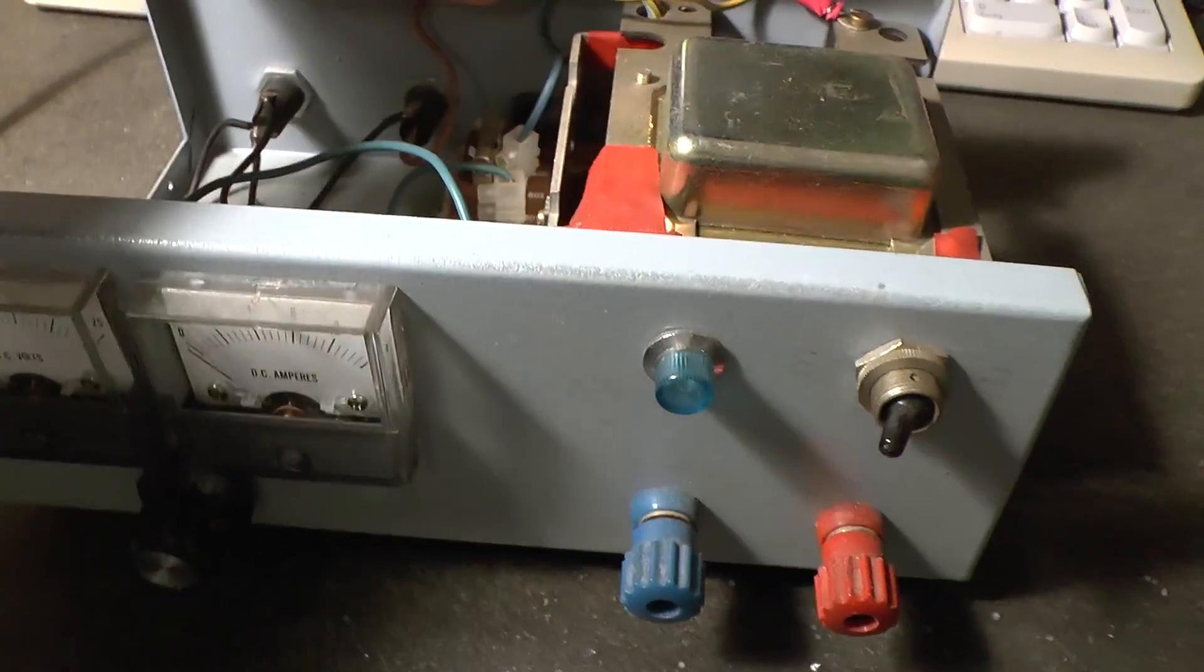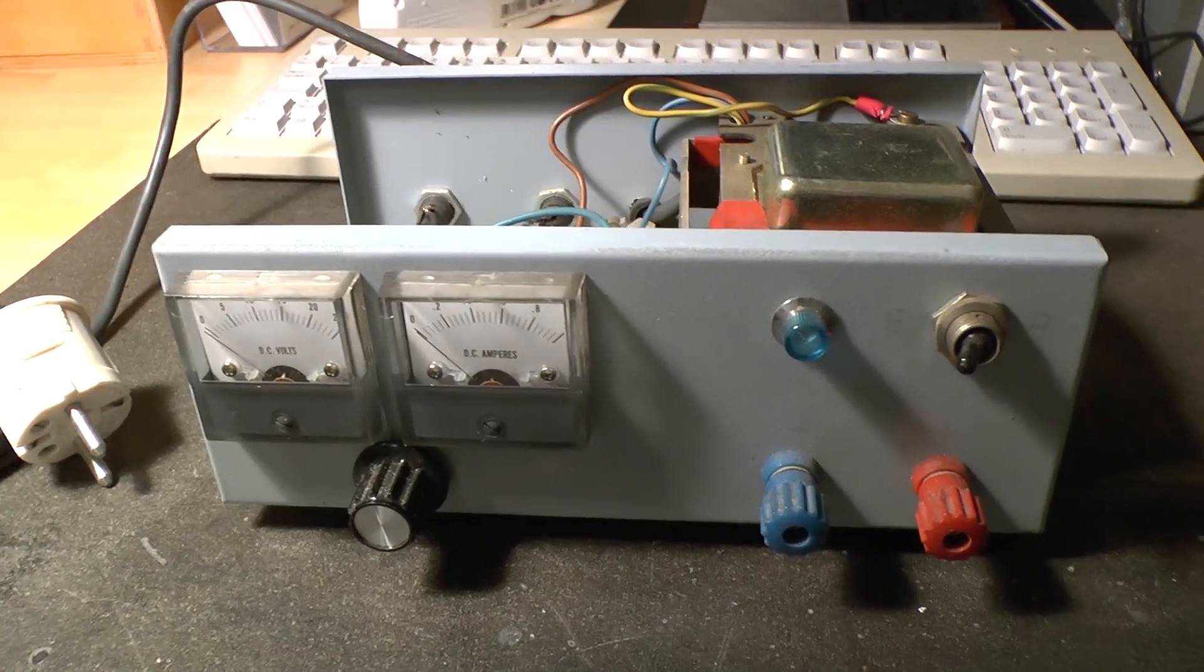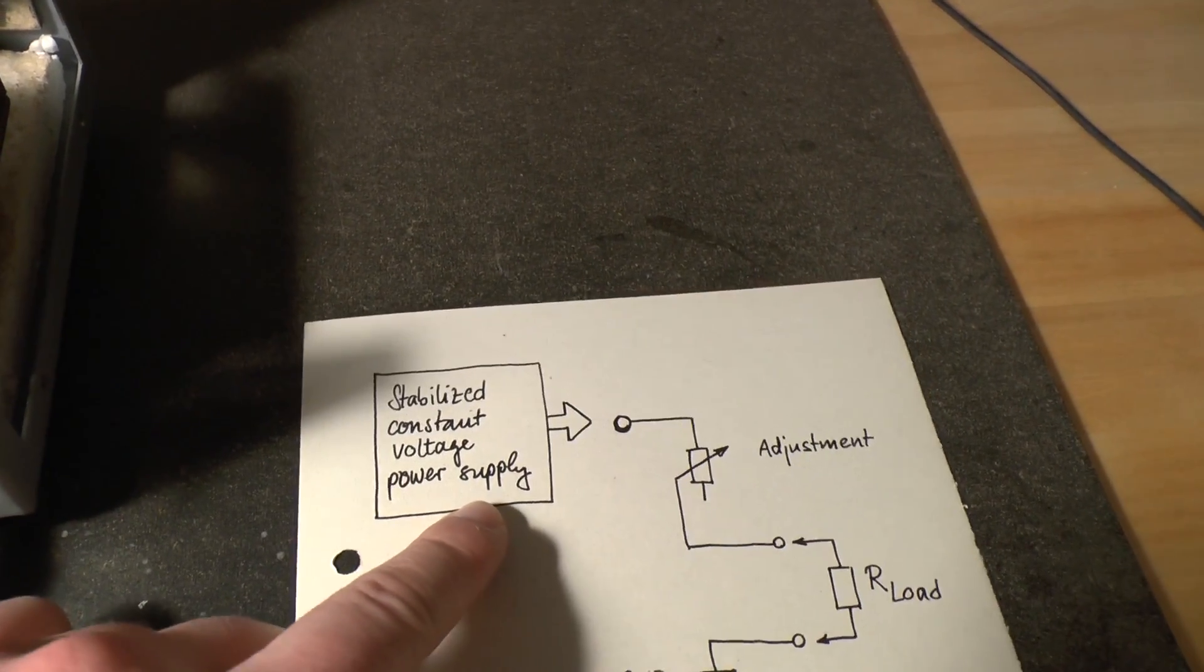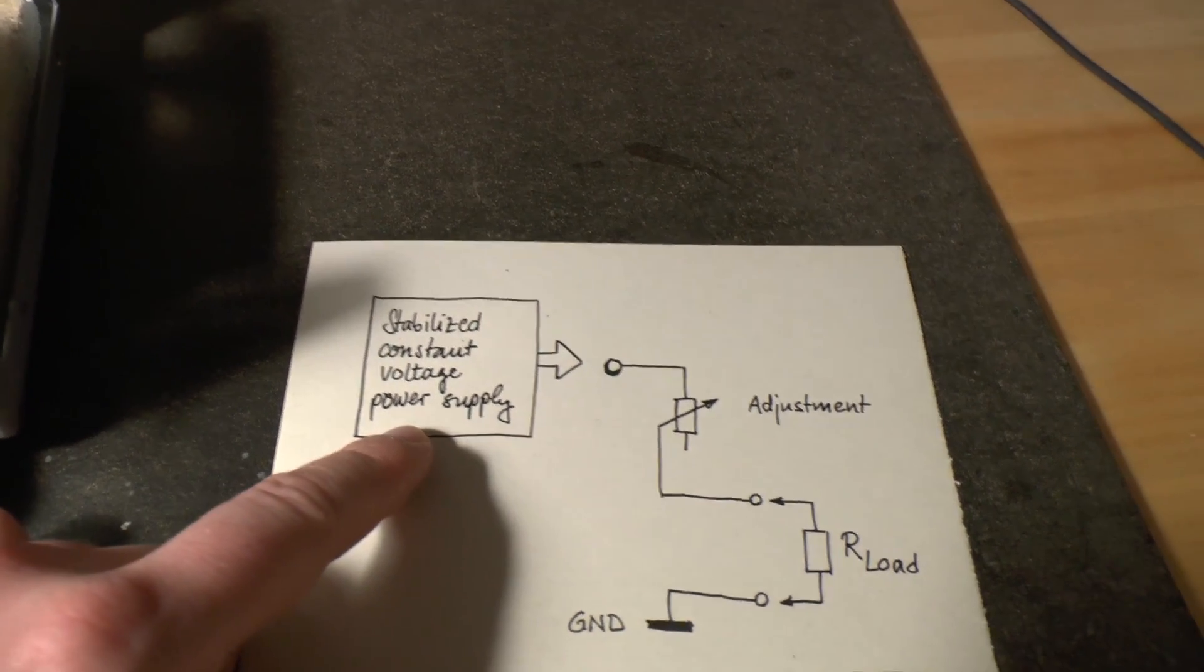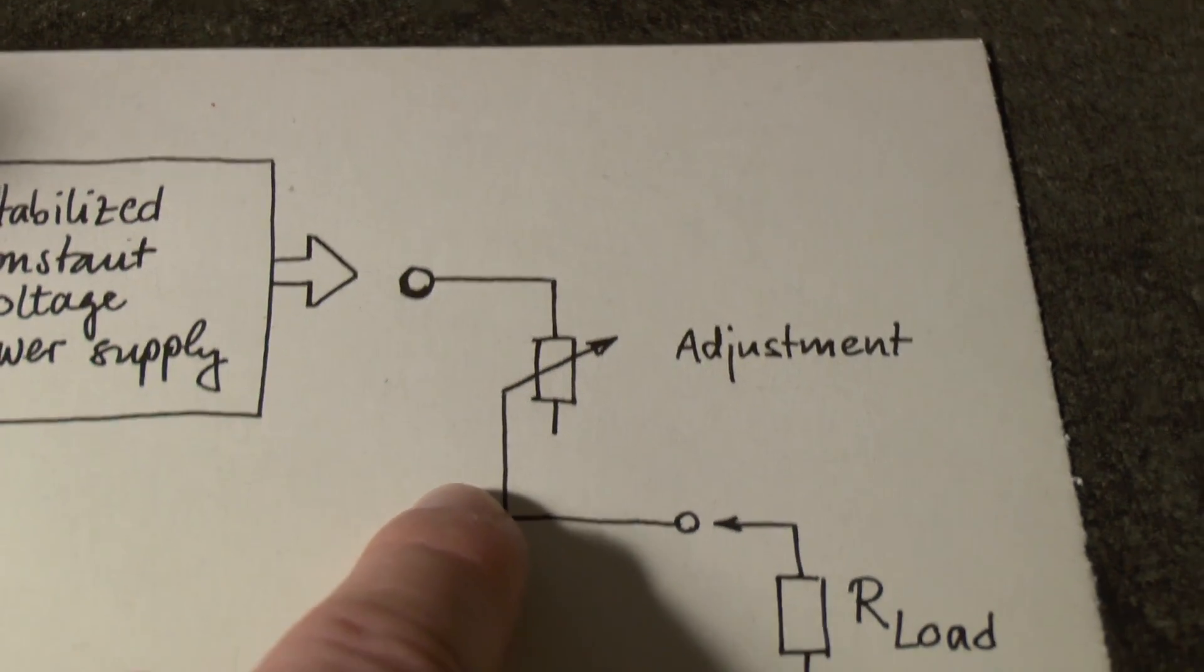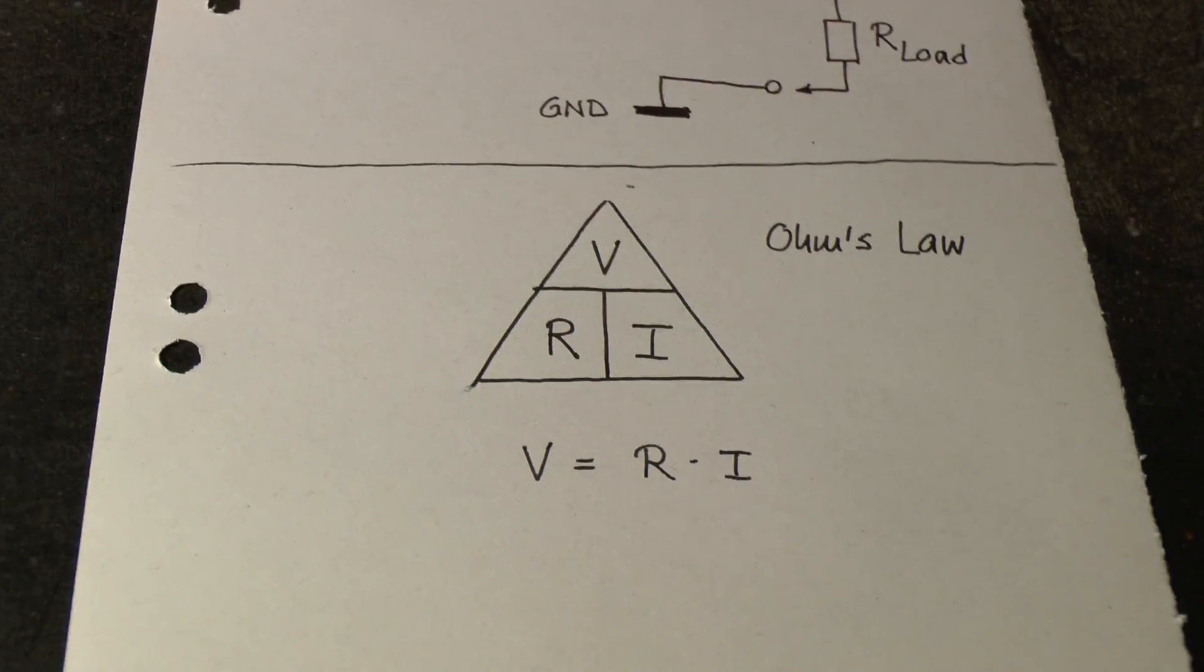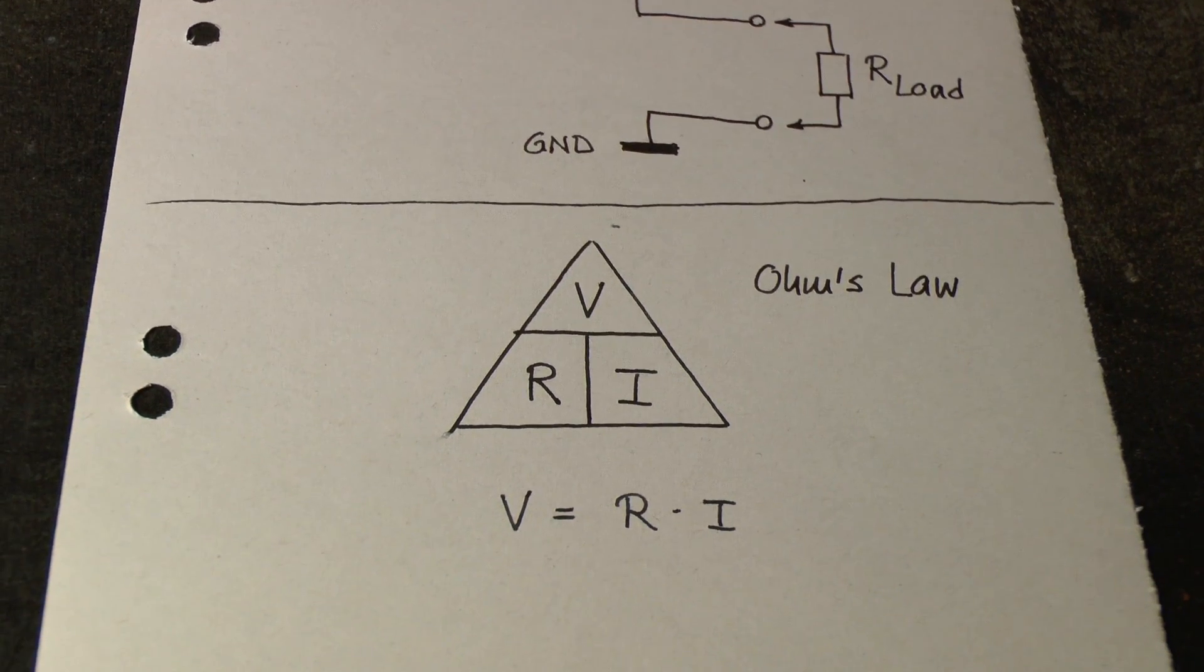Now why is it such a bad idea to use this sort of setup? Well I have drawn a little schematic right here to sort of explain this. So we have our stabilized constant voltage power supply out of that Telefunken device and this feeds the adjustment right there, this little adjustable resistor, and then it goes out into a load. The problem is Ohm's law, right there.